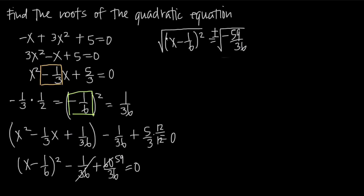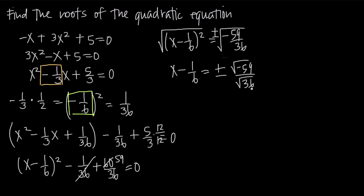When we take the square root of the left-hand side, the square root and the square cancel with one another, leaving us with just x minus 1 over 6. On the right-hand side we have plus or minus. Remember, when we take the square root of a fraction, we can take the square root of the numerator and denominator separately. So we'll get square root of negative 59 over square root of 36. We know that the square root of 36 is 6, so we can simplify that.